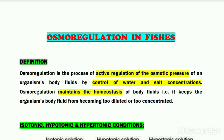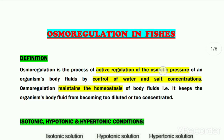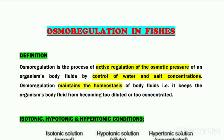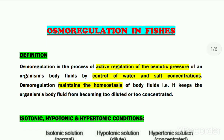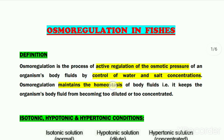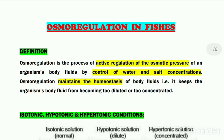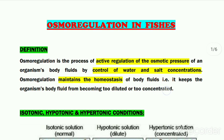Hello dear students. Our today's topic is Osmoregulation in fishes. First of all, what is Osmoregulation? Osmoregulation is the process of active regulation of the osmotic pressure of an organism's body fluids by controlling its water and salt concentrations. The main purpose of Osmoregulation is to maintain the homeostasis of the body fluids, which means it prevents the organism's body fluids from becoming too diluted or too concentrated.